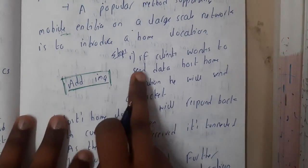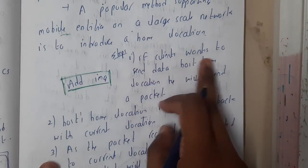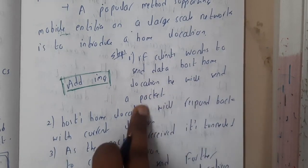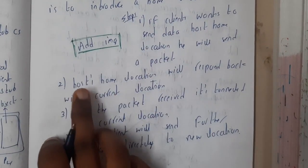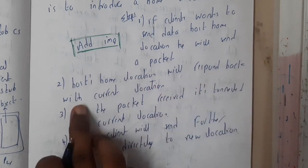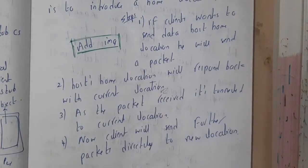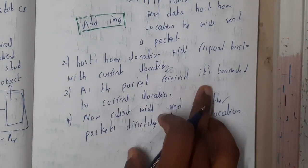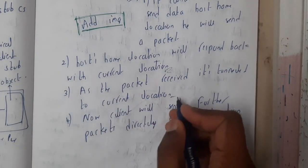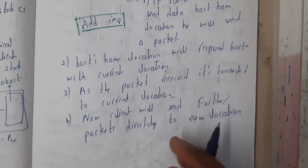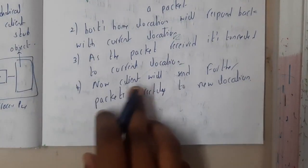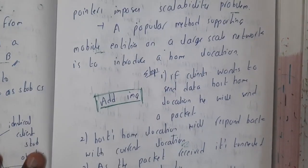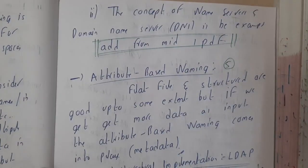To summarize the steps: if a client wants to send data, it sends the packet to the host's home location. The home location responds back with the current location, since the host has changed its location. The packet is then tunneled to the current location. After that, the client will send all further packets directly to the new location. That is the process of the home-based approach.